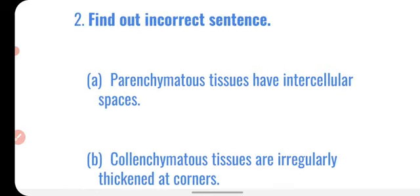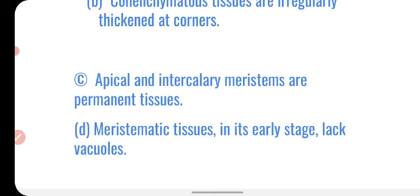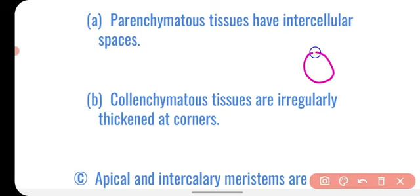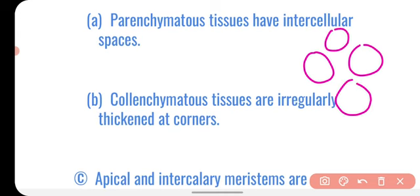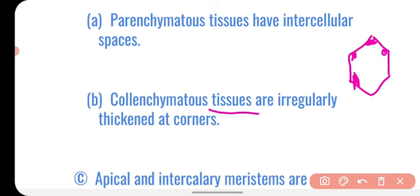Question number two: find out the incorrect sentence. The first statement is parenchyma tissues have intercellular spaces — this is true. Colenchymatous tissues are irregularly thickened at corners — this is also correct, as colenchyma cells are thickened at the corners.